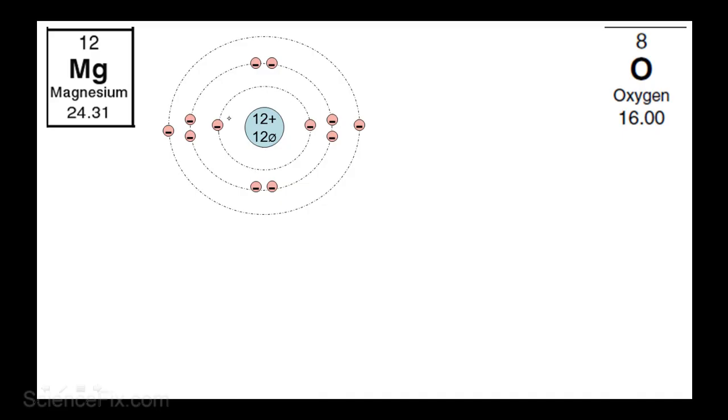There's 2 in the first energy level, 8 in the second, and 2 in the third. The outermost energy level electrons are called valence electrons. So magnesium has 2. So the electron-dot diagram for magnesium shows the 2 valence electrons.